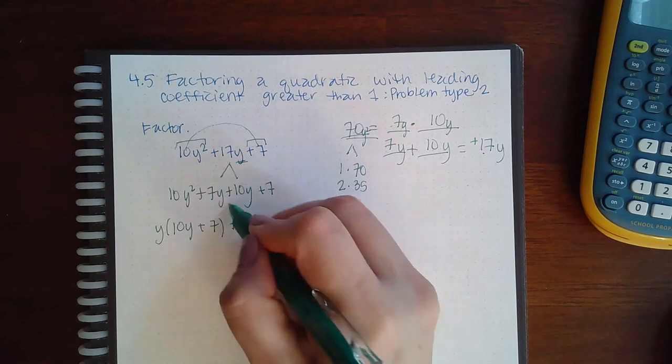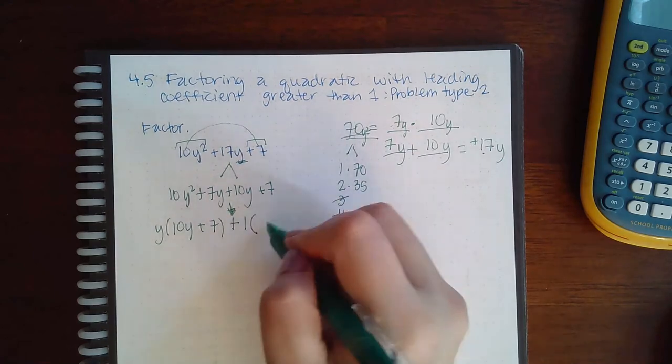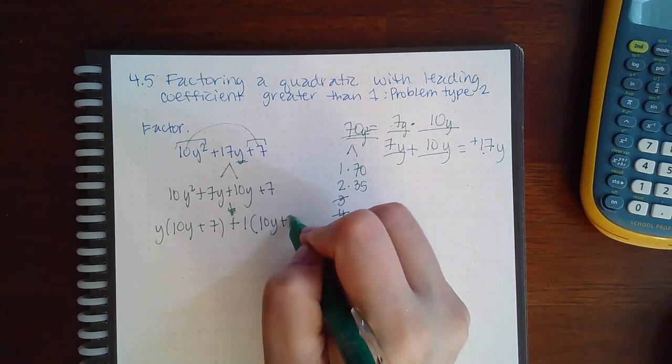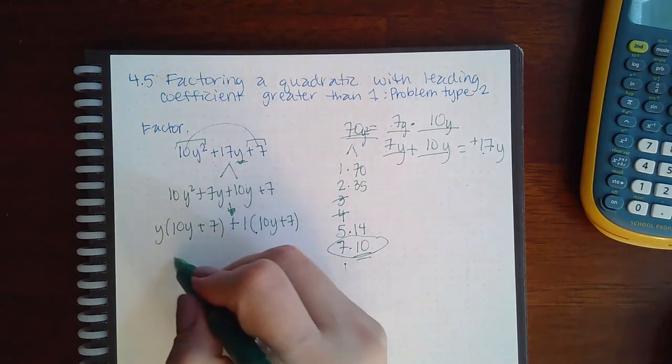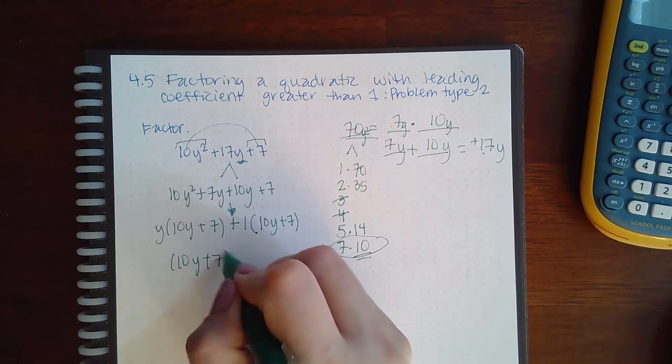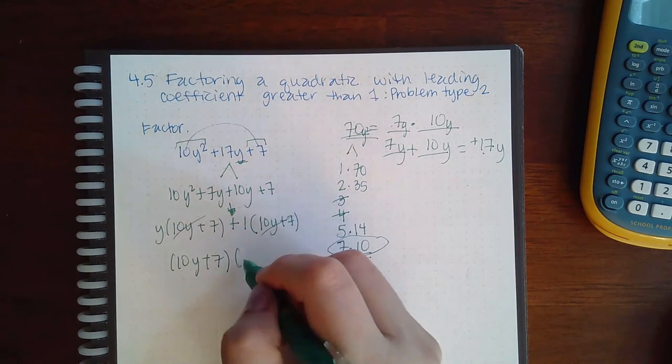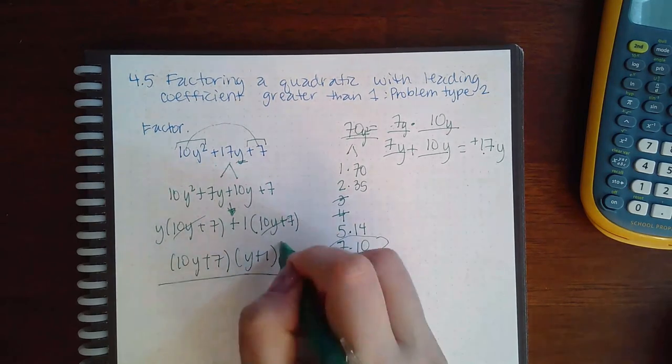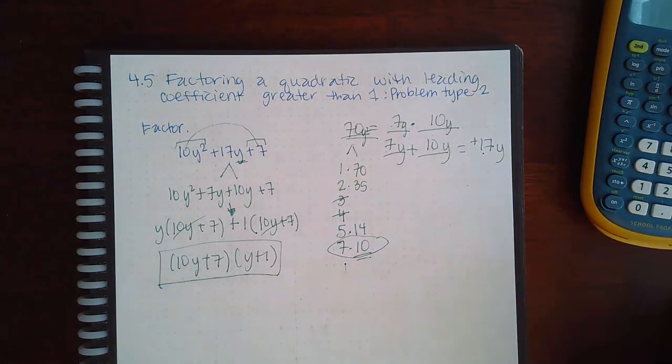I end up with 10y plus 7. And then they both have 10y plus 7 in common, and when I factor that out, I'm left with y plus 1. So this is the final factorization.